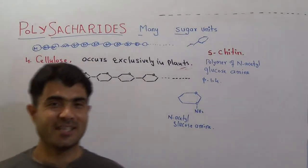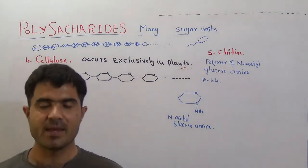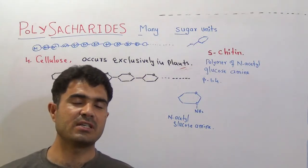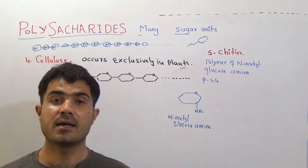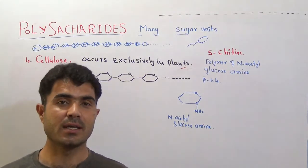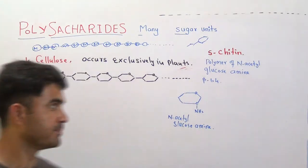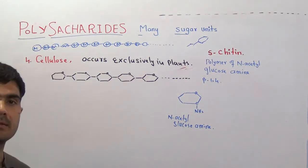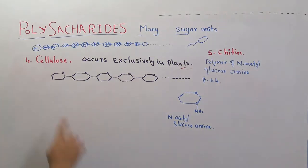Welcome to the second part of the polysaccharide lecture. We have just two polysaccharides left, that is cellulose and chitin. So let's start with cellulose and chitin. Cellulose is again a homopolysaccharide, meaning you will see many monosaccharide units linked with one another.